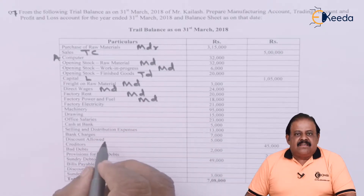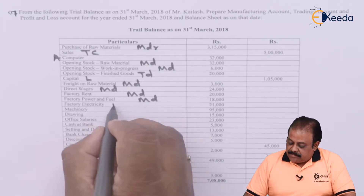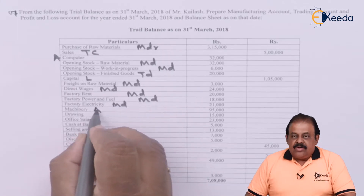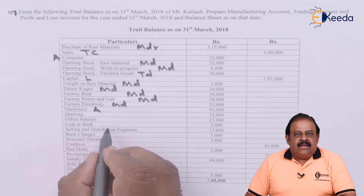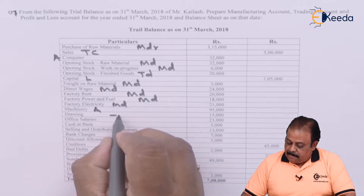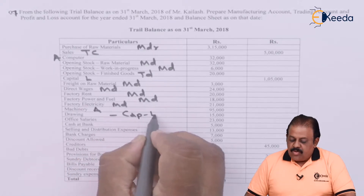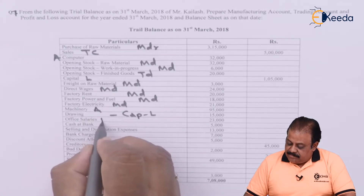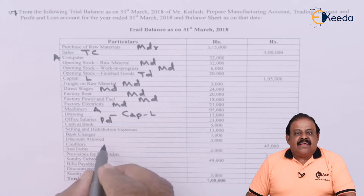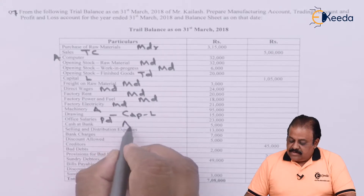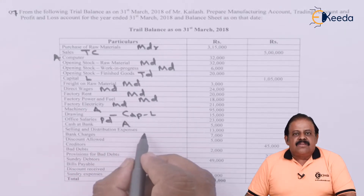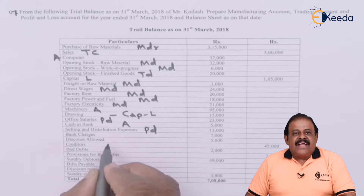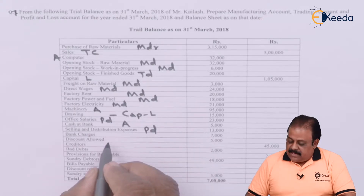Factory electricity — manufacturing account debit. Machinery — asset, drawings — less from capital liabilities. Office salaries — profit and loss account debit. Cash at bank — asset. Selling and distribution expenses — profit and loss account debit. Bank charges — profit and loss account debit.